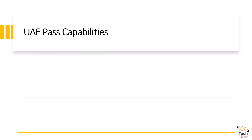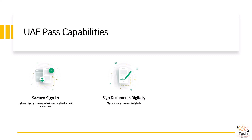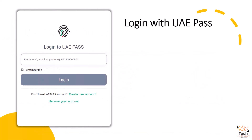So what are some of the UAE Pass capabilities? First of all, secure sign-in — we can log in and sign up to many websites and applications with one user account. We can sign and verify documents digitally, and also we can request and share official documents with various partners. In this video specifically, we are going to focus on login, or user authentication, with UAE Pass.